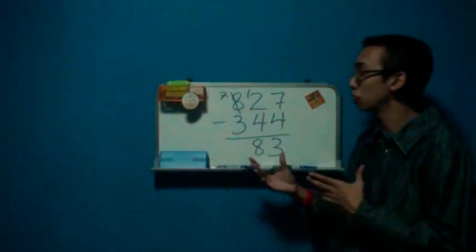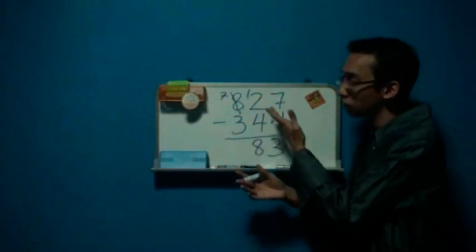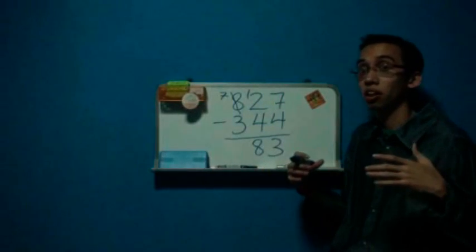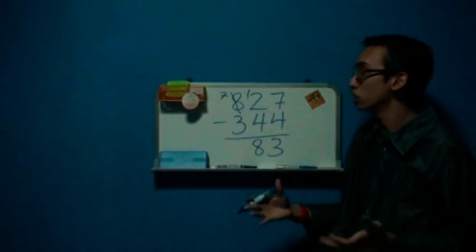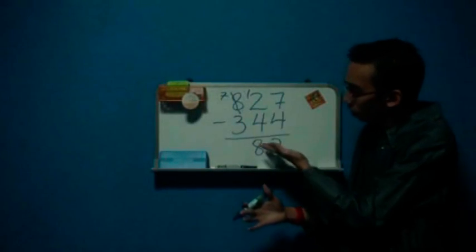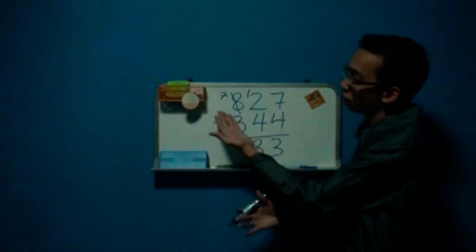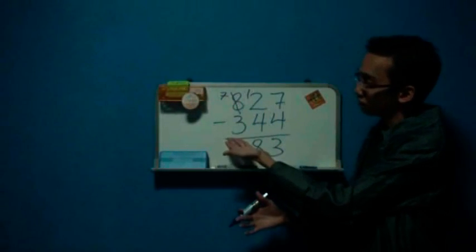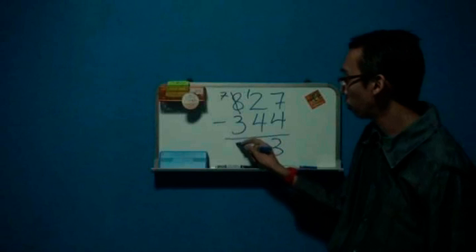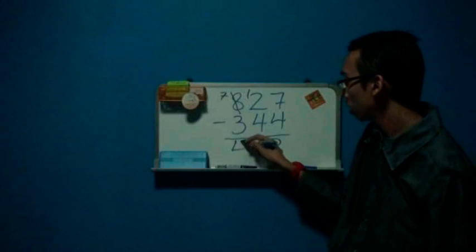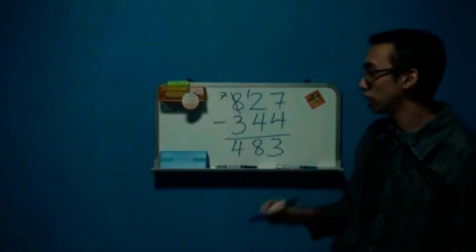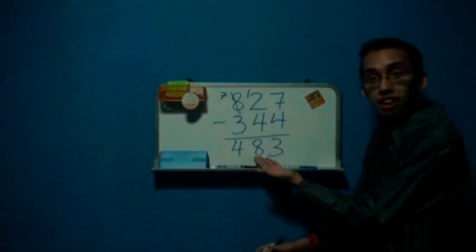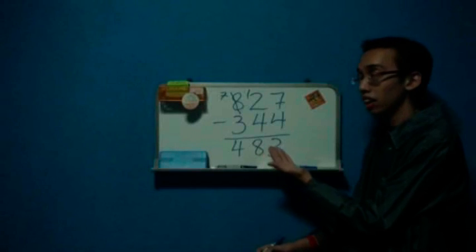I hope you have learnt something here — whenever we can't subtract, we always regroup. So now our equation, we are left with 7 minus 3 in the hundreds place. So that will give us 4, providing us an answer of 483.